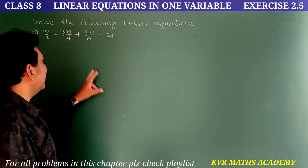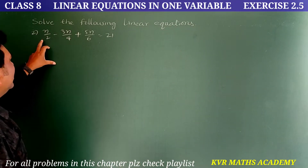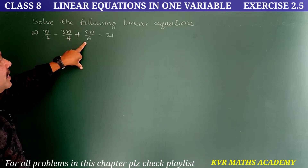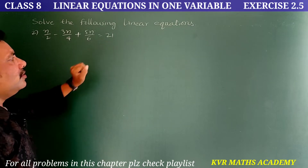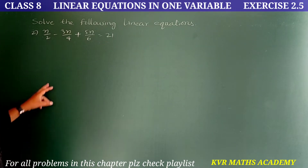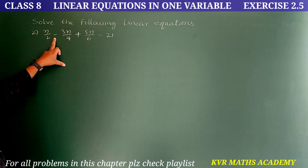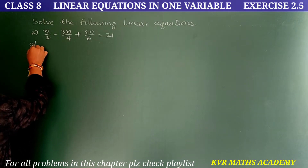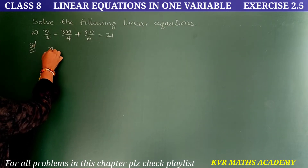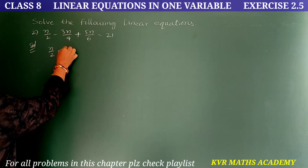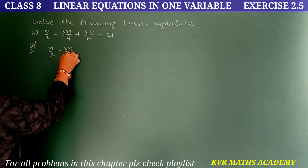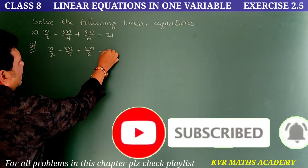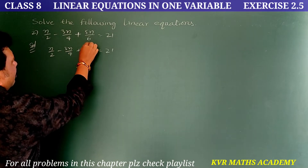Second question: n/2 - 3n/4 + 5n/6 = 21. We have to find the value of n. Solution — the given equation is n/2 - 3n/4 + 5n/6 = 21.